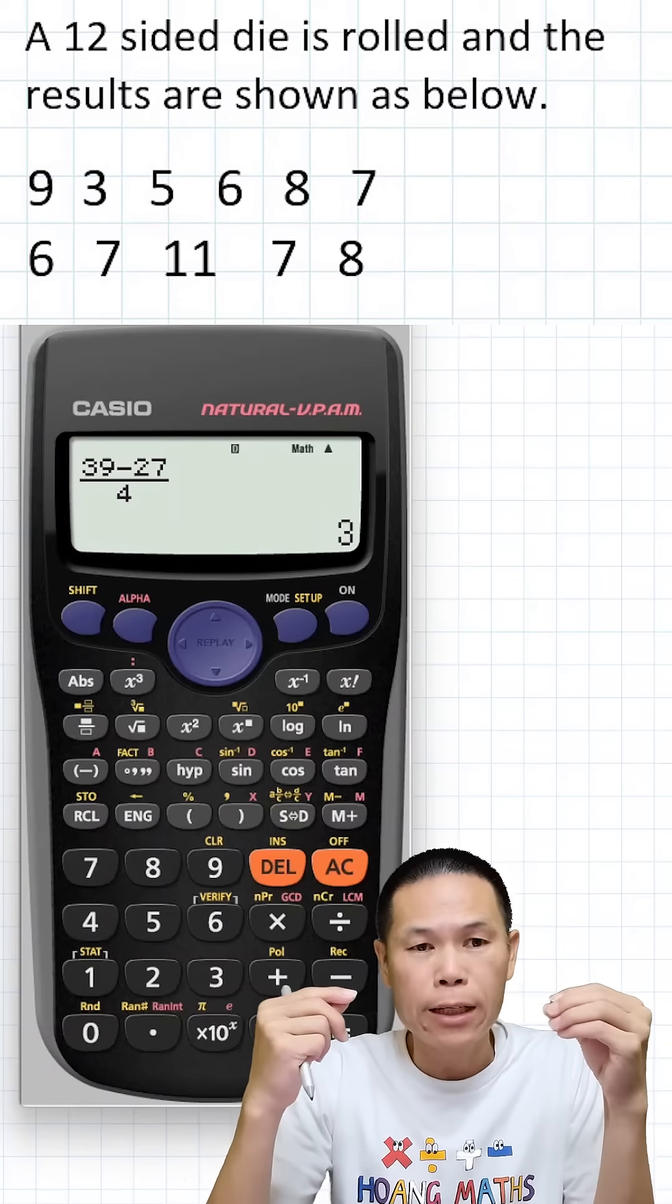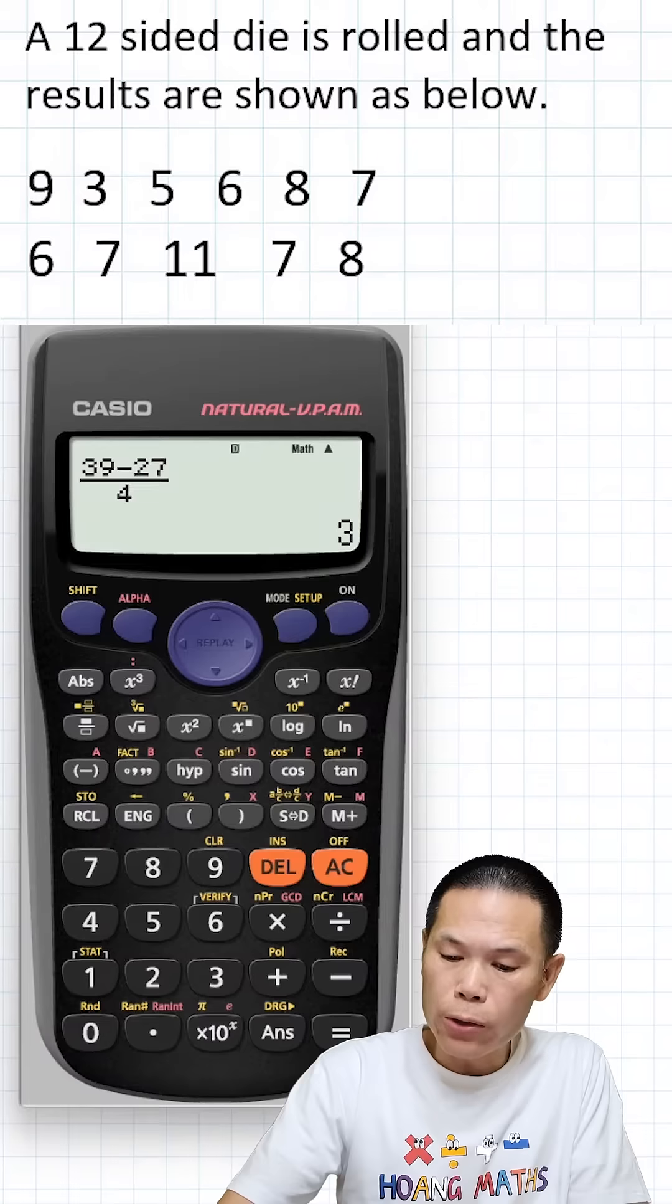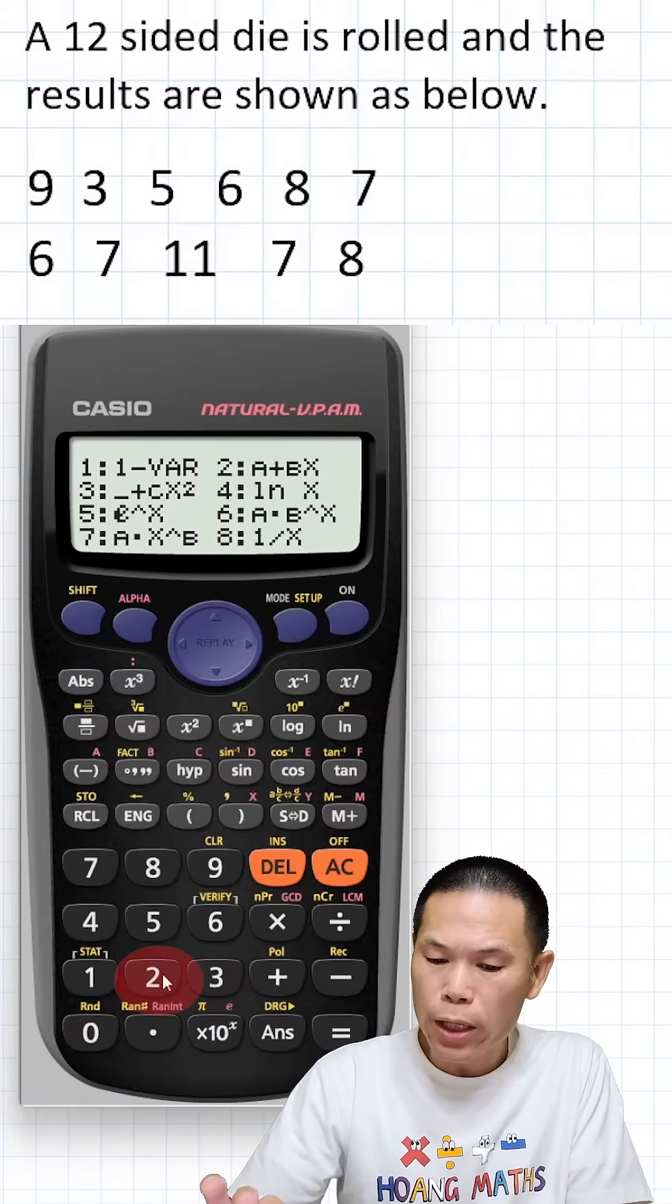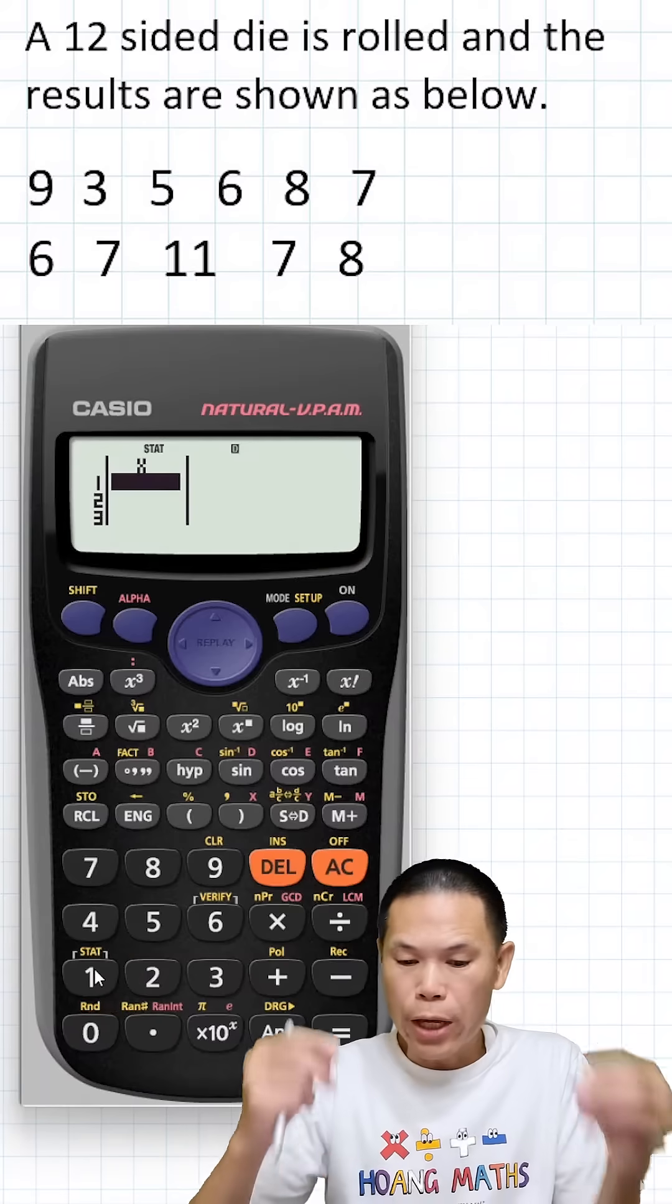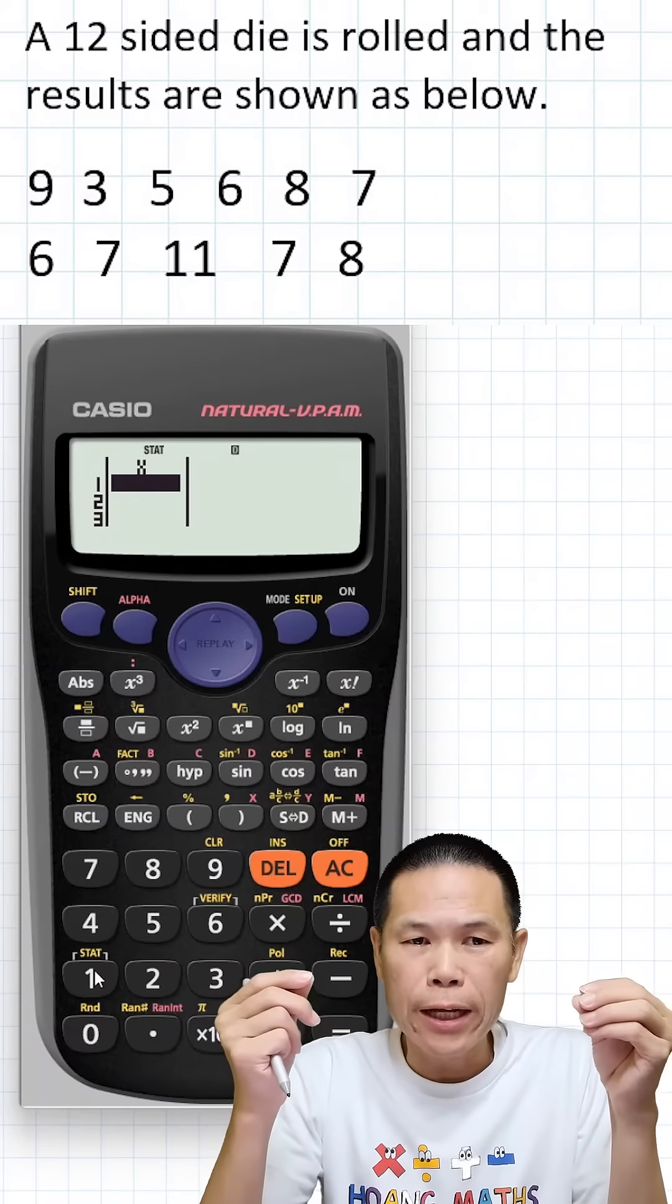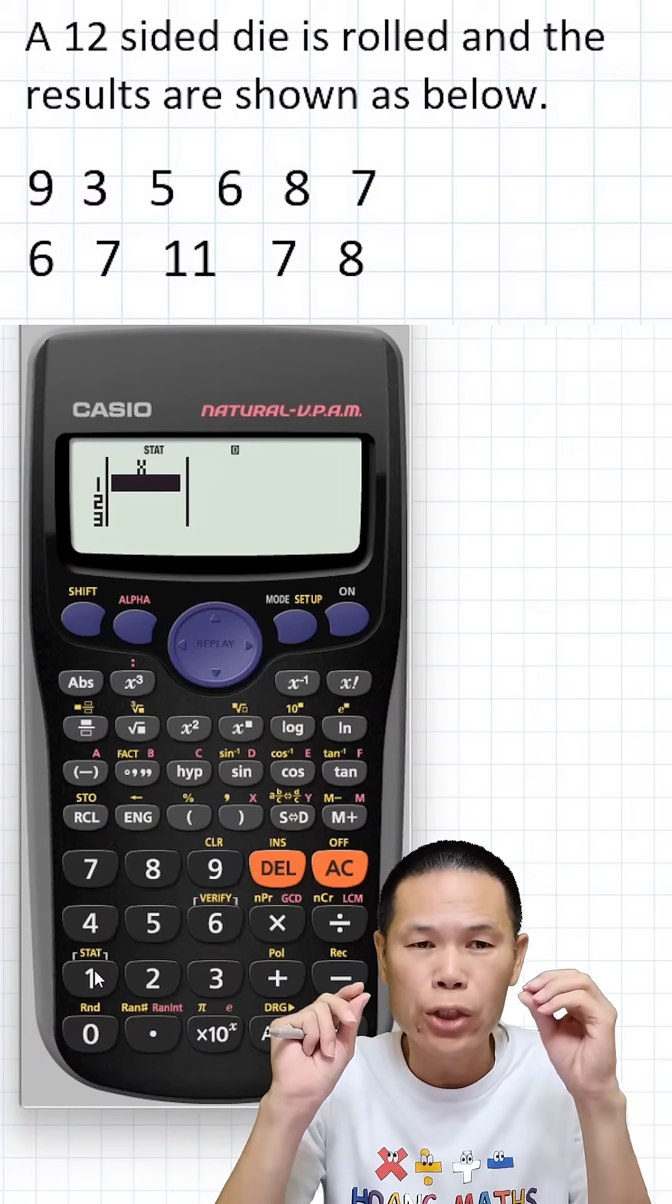First, I need to go to statistic mode. I go to setup and then option two, which is statistic mode, and then option one. If your calculator has a frequency column, it doesn't affect anything, so just leave it as is and ignore that column.